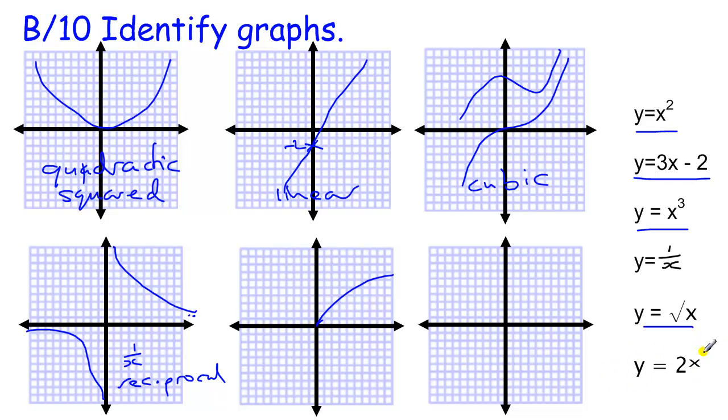This one is an example of an exponential graph. Because, as this is 2 to the power of x, this gets very big very quickly. So if x was 0, 2 to the power of 0 is 1. And then when x is 1, 2 to the power of 1 is 2. And then 2 to the power of 2 is 4. And then 2 to the power of 4 is 8. And 2 to the power of 8 is 16. And then that gets big very quickly.